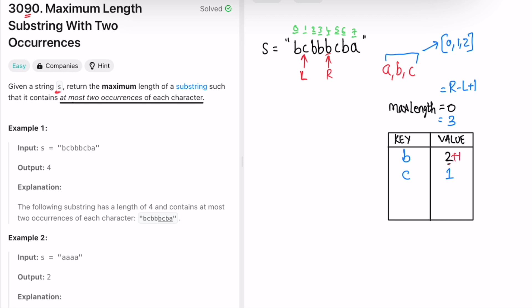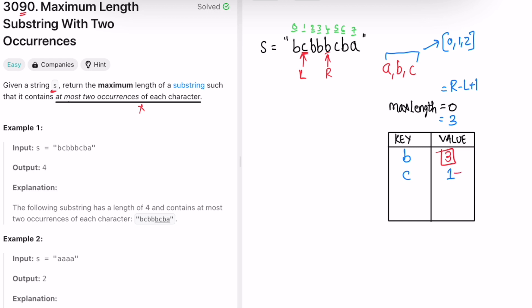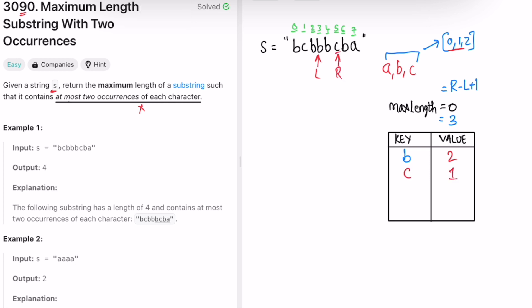The right pointer is at b again so we add plus one and b's value is three again — the condition fails. The value at left is c, so we subtract one and c's value becomes zero. Since c's value is zero it means it's not present, so we remove it from the map and move the left pointer. We check if the value at right is within range — no — so we subtract the value at left again. B becomes two. Move the left pointer again; now the value at right is within range, so we increment right and set the new character's frequency to one.